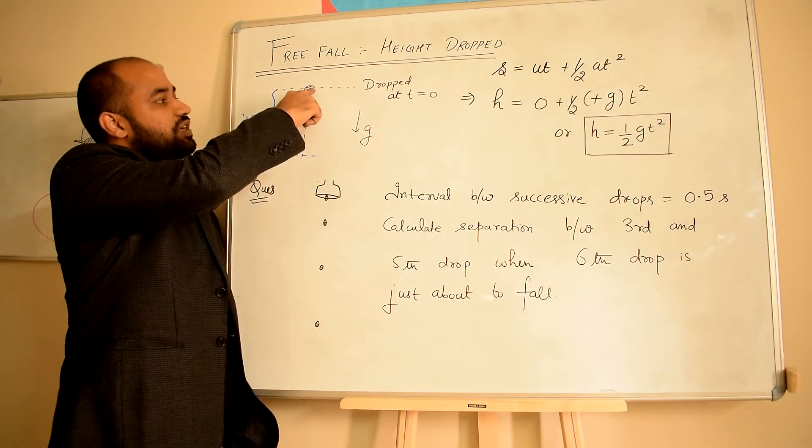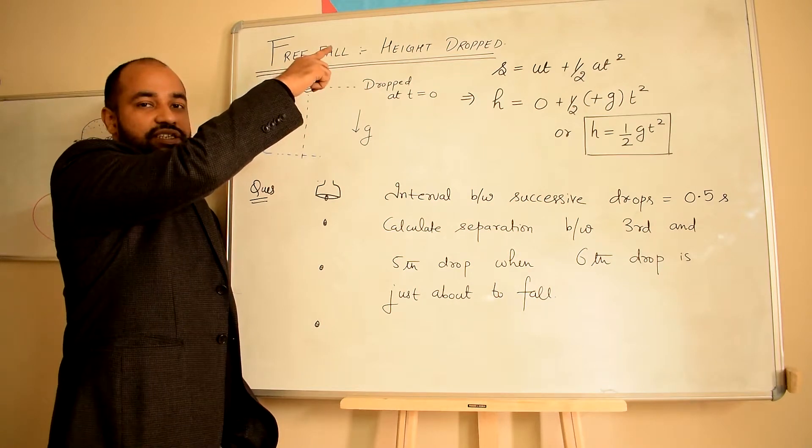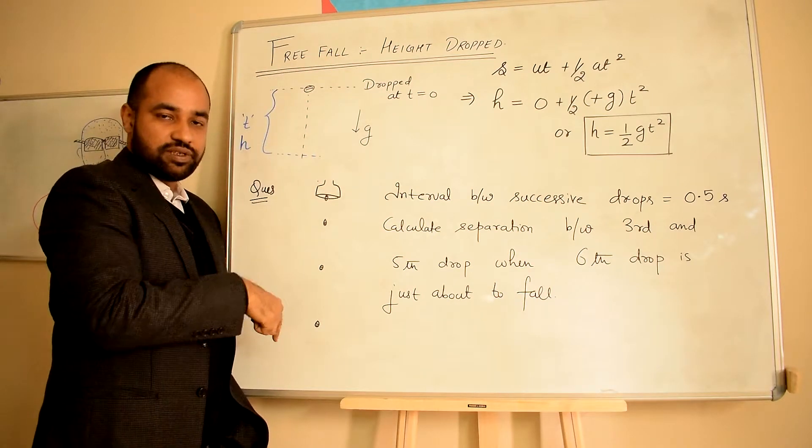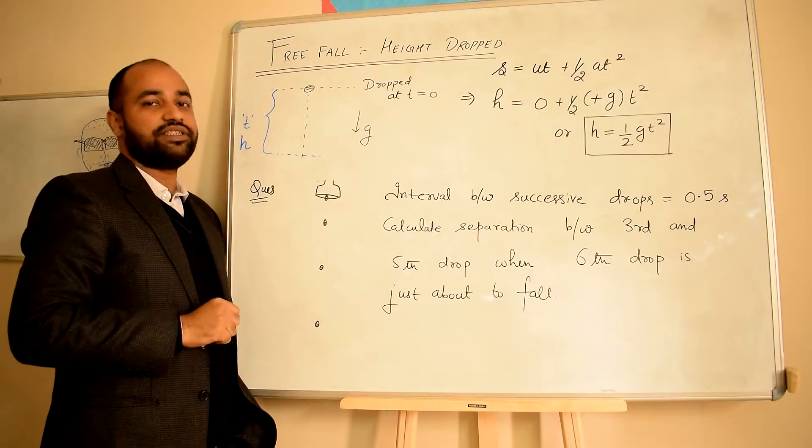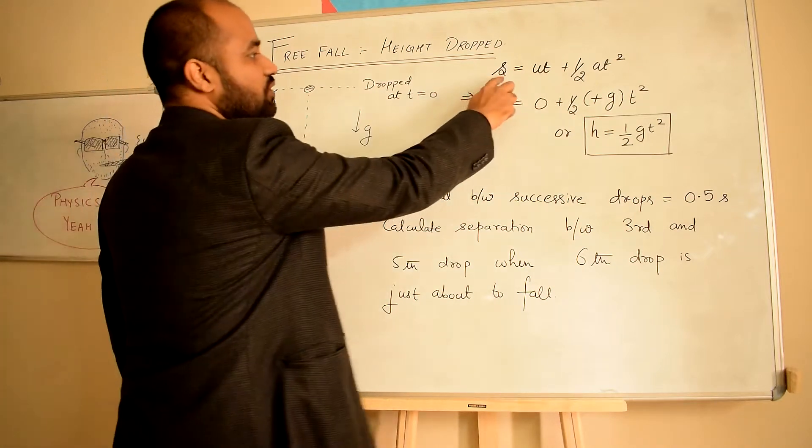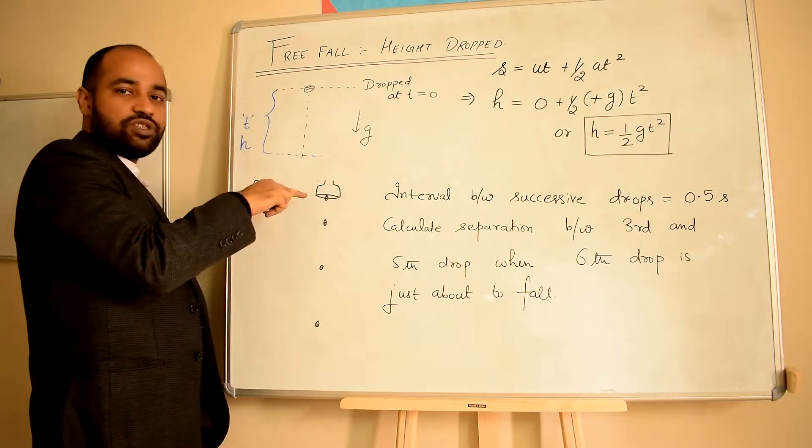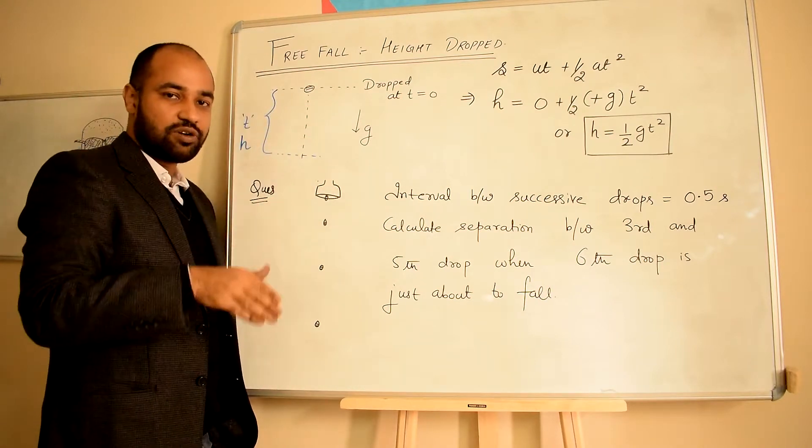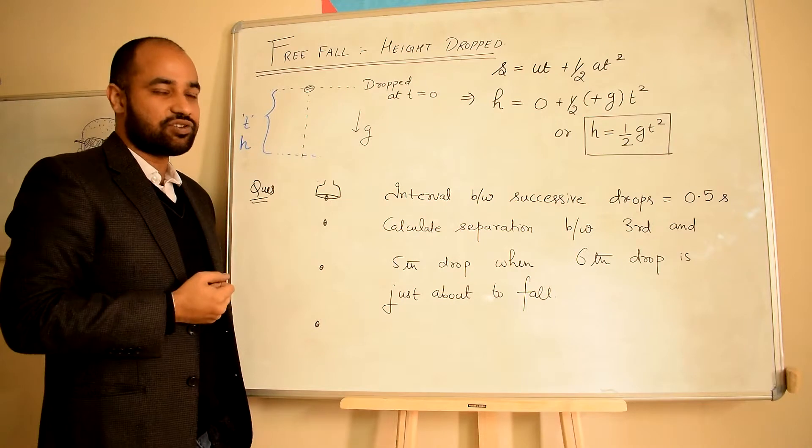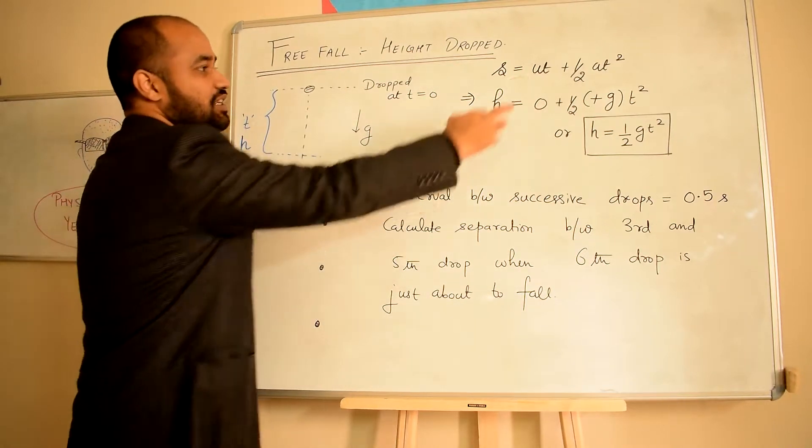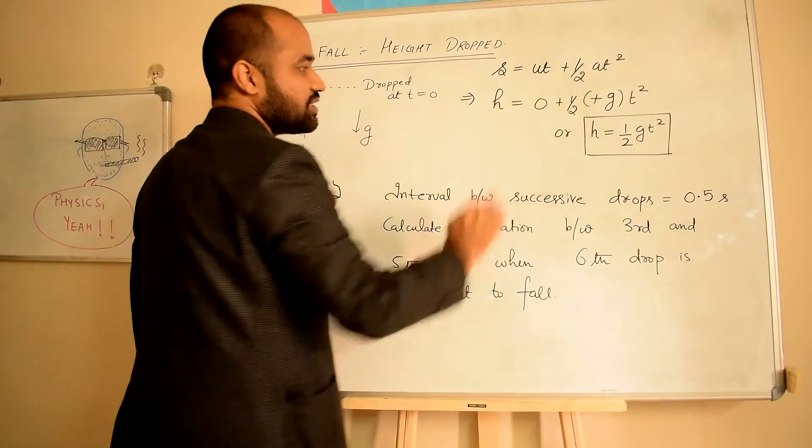If your initial velocity is 0, and we define the positive direction of the axis downwards, which means acceleration will be +g. Using S = ut + ½at², you can find displacement downwards. Let's say a height h would drop - initial velocity is 0, acceleration is +g.